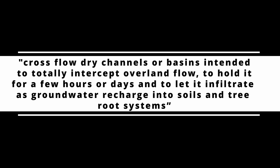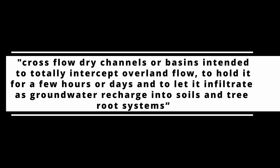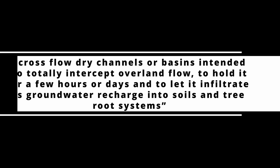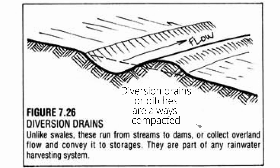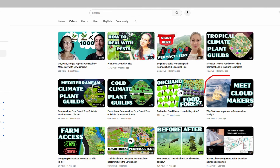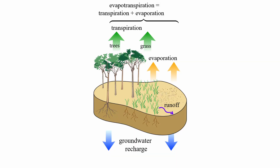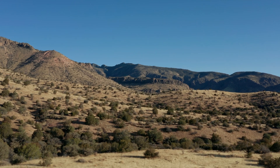Swales hold water for a few hours or a few days and let it infiltrate as groundwater recharge into the soil and tree root systems. Permaculture swales without trees planted on the swale mounds are not really swales — they would be uncompacted ditches posing a risk of waterlogging. Trees are essential because without them there wouldn't be evapotranspiration, which is the total amount of water that goes from the ground and plants into the air as vapor.